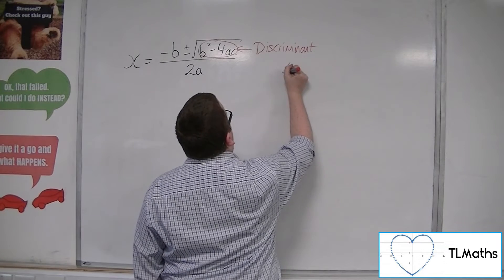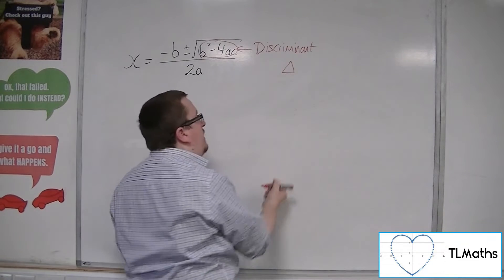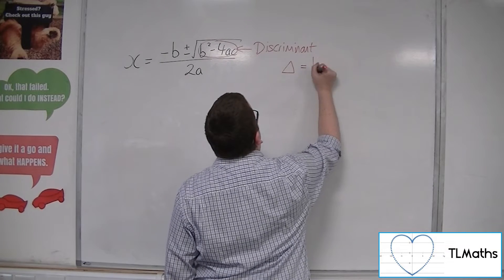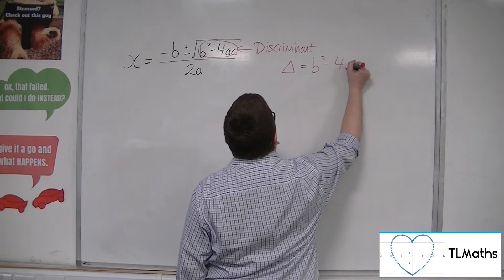So this discriminant, sometimes we label as this triangle. You don't have to use this, but this triangle represents b squared minus 4ac.